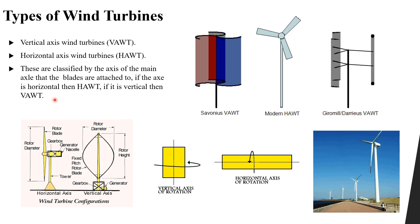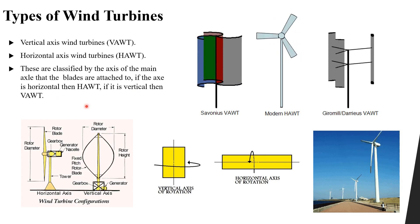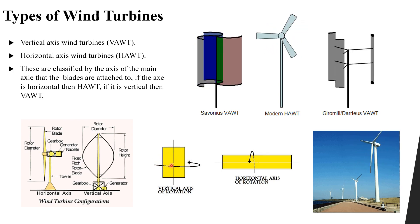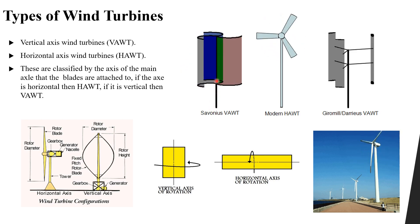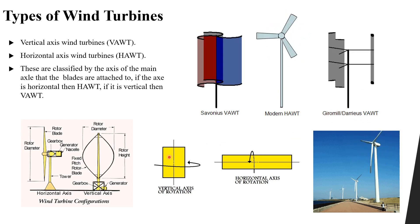Let's understand this in a simple way. A vertical axis means we have a vertical axis, and our rotor blades are rotating around this axis. As you can see, these blades are rotating around a vertical axis — that is why this type is called the vertical axis wind turbine.